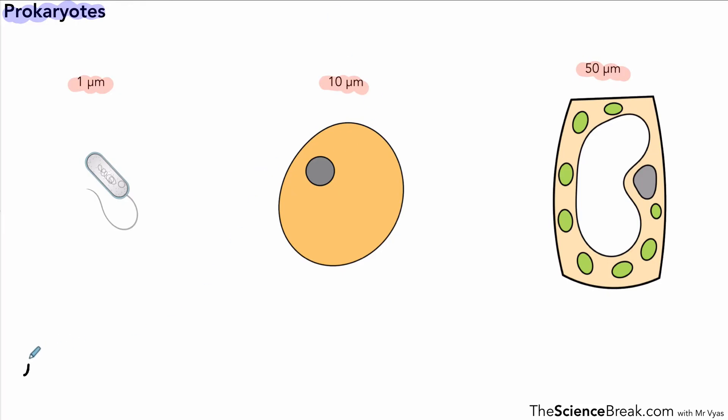With prokaryotes we often refer to those as bacteria. I've put in some measurements there: one micrometer, 10, and 50 micrometers. That symbol means micrometers, and one micrometer is the same as one millionth of a meter, or you could say 10 to the minus 6. That's the kind of size we're talking about.